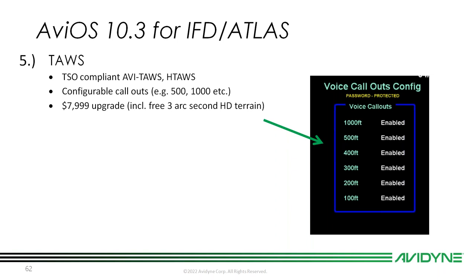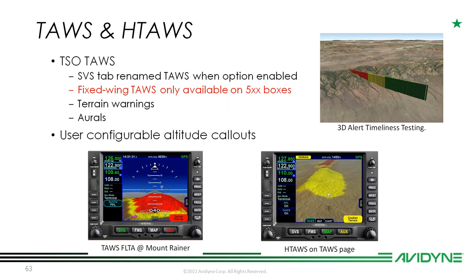We added TSO'd TAWS for the IFD and the Atlas — both TAWS and HTAWS. We added more voice callouts that you can enable or disable: originally just the 500-foot callout, now we've added 1,000 feet all the way down to 100 feet. TAWS is TSO'd and is an optional upgrade at $7,999. It includes the free three arc-second HD terrain we talked about earlier. The IFD has to come back for the hardware modification, but that's a feature of TAWS.